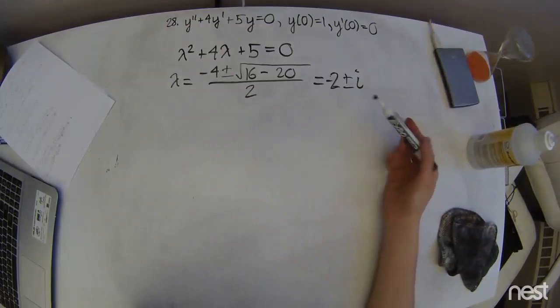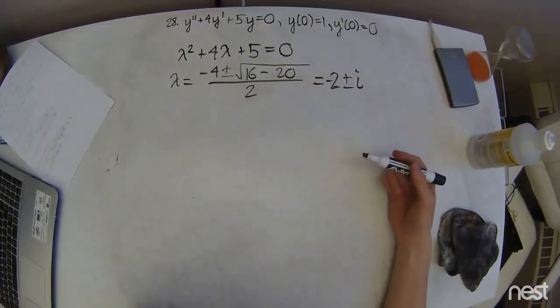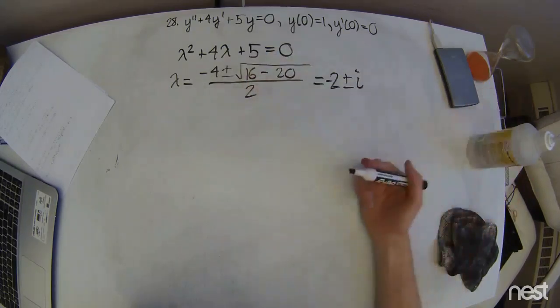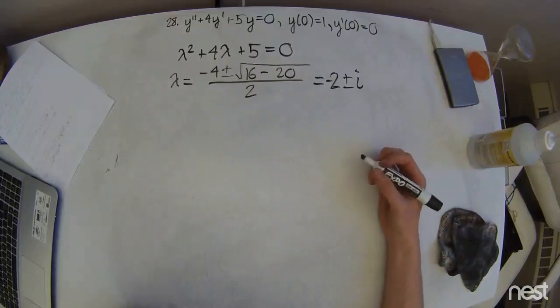And that comes from the fact that 16 minus 20 is negative 4, and then you can work it out from there. It's easy enough.